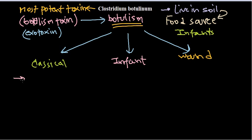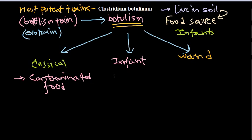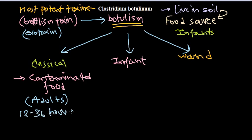In classical botulism, this is a typical case arising from a contaminated food source. It is most common in adults, and symptoms of this kind of infection can be seen within 12 to 36 hours of infection. Symptoms include muscle spasm.